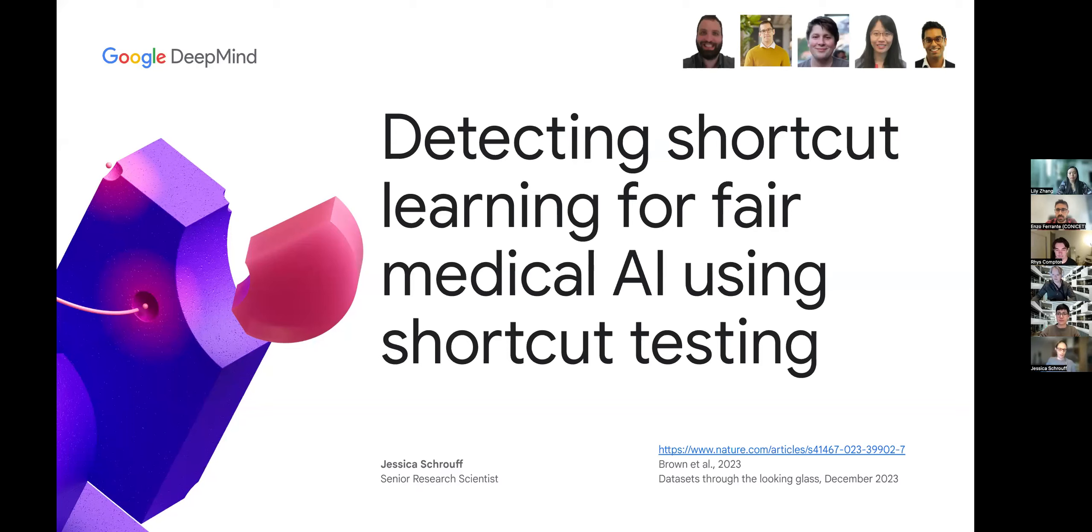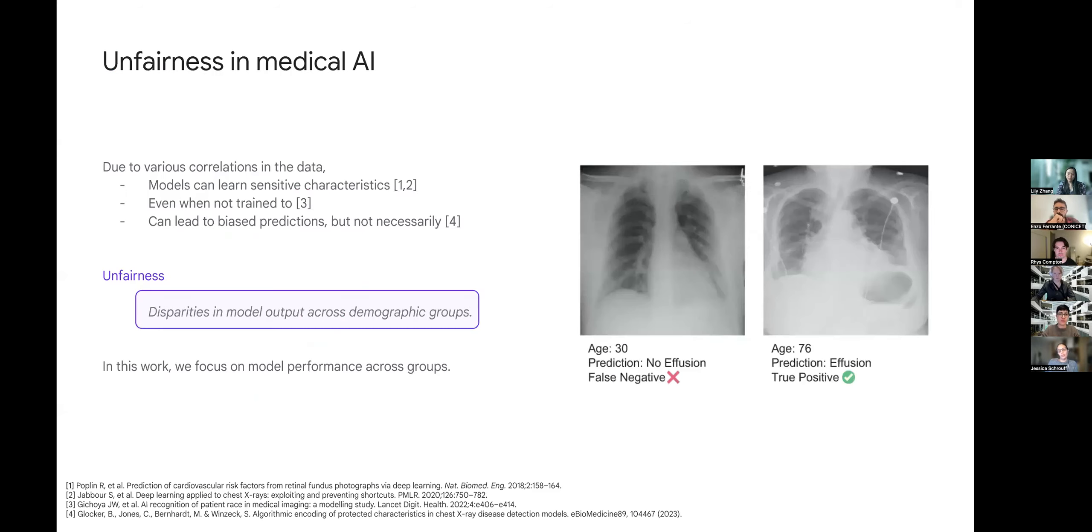Today I'm going to talk about work done fairly recently while I was still in Google Research before I joined Google DeepMind. This work is anchored in medical AI, but it actually doesn't need to be. It was led by Alex Brown, who was an AI resident at Google at the time. We're going to talk about detecting shortcut learning for fair medical AI.